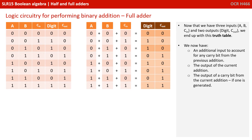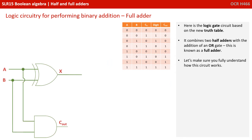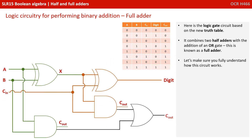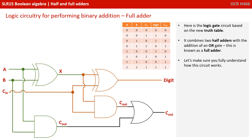We now have an additional input to account for any carry bit from the previous addition, the output of the current addition, and the output of a carry bit from the current addition if one is generated. Here is the logic gate circuit based on the new truth table. It combines two half-adders with the addition of an OR gate, and this is known as a full adder.